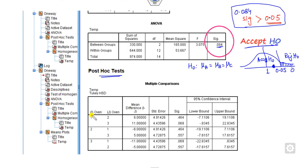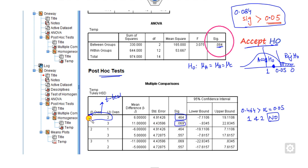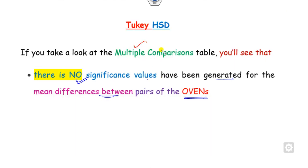Also look at the post hoc tables. Comparing ovens 1 and 2 using the Tukey test, the SIG value is 0.464, which is greater than alpha 0.05 — so there is no significant difference between ovens 1 and 2. Similarly, comparing 1 and 3, and 2 and 3, all SIG values are greater than alpha. Based on this Tukey multiple comparison test, there is no statistical difference between any of the ovens.